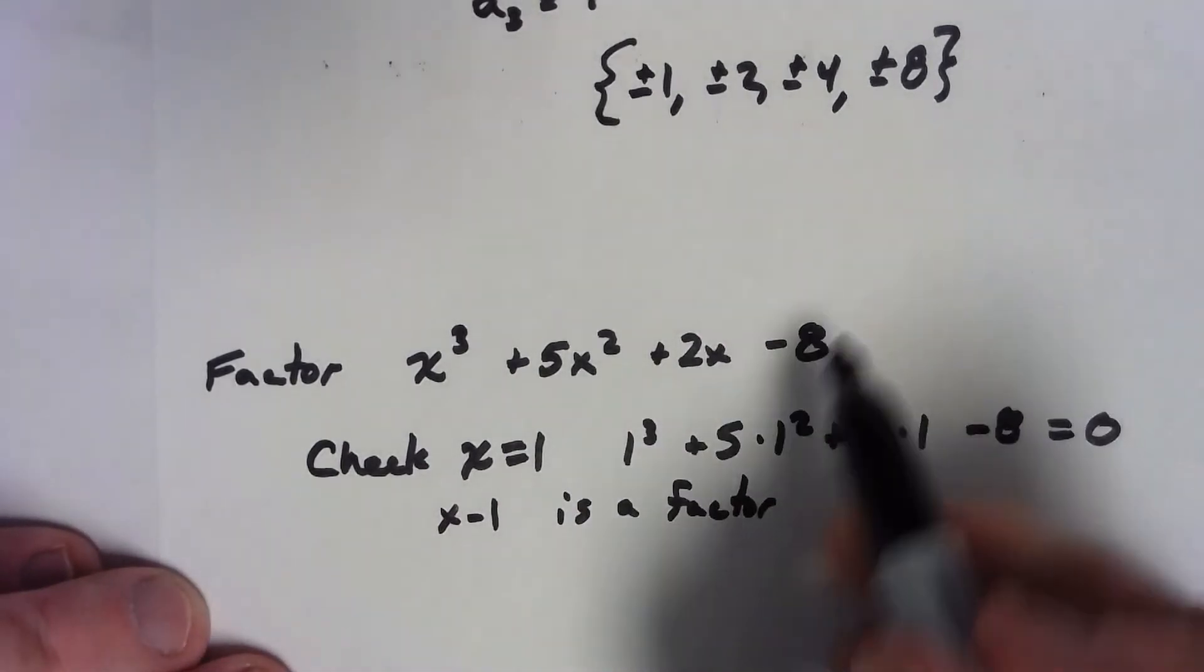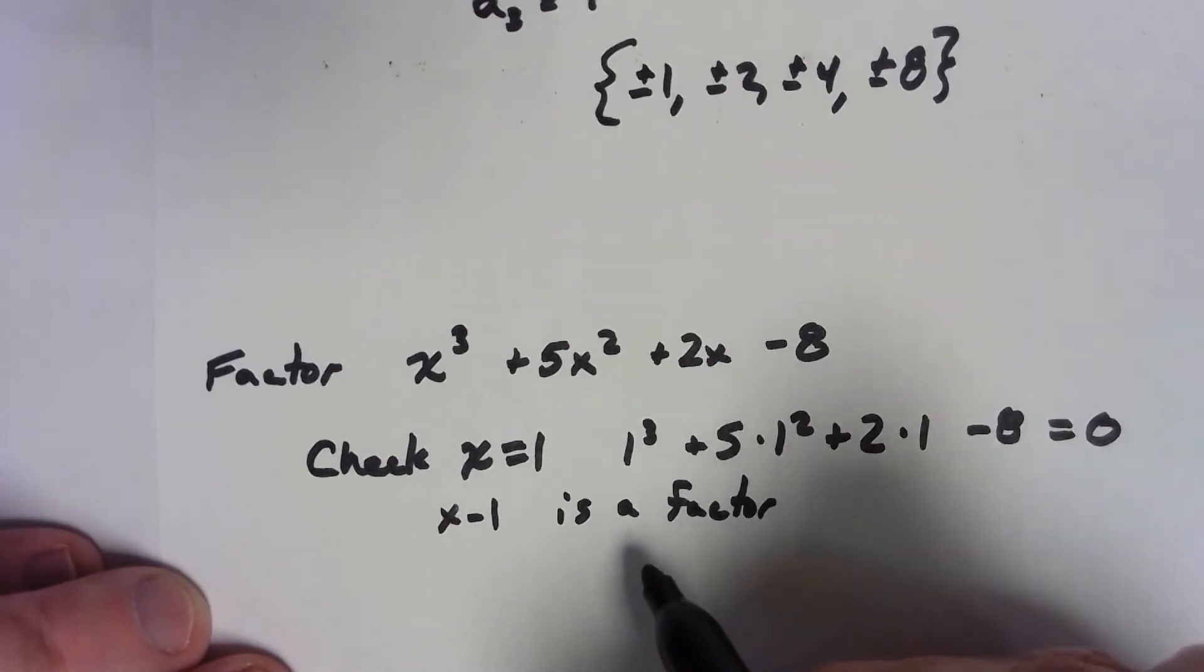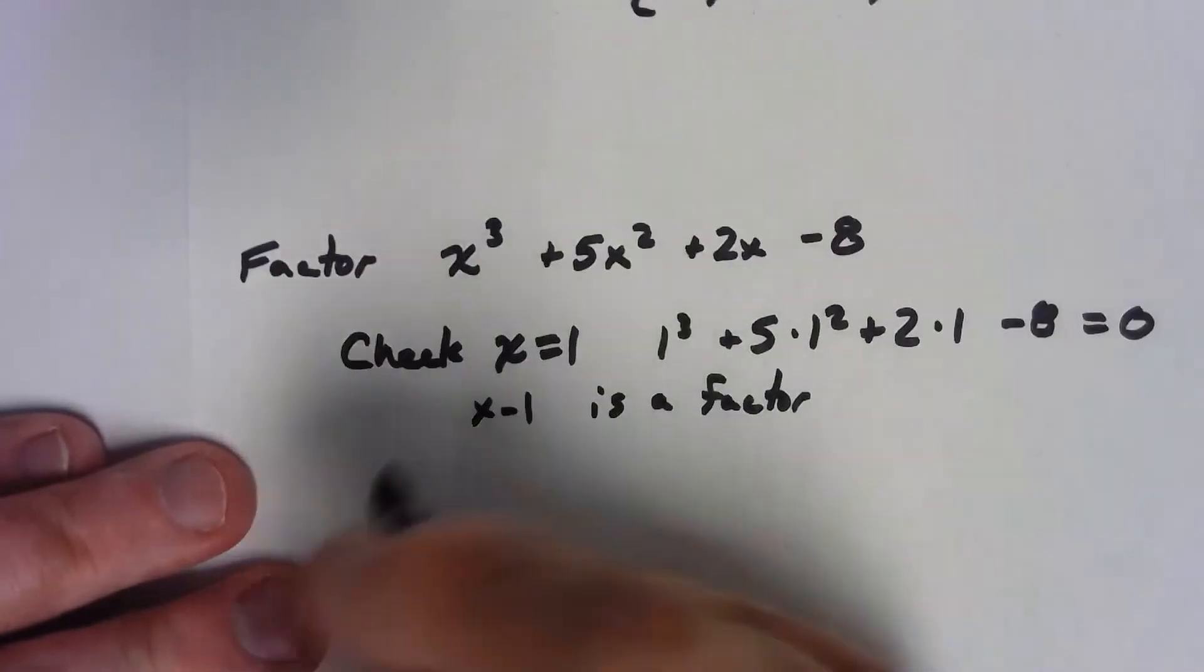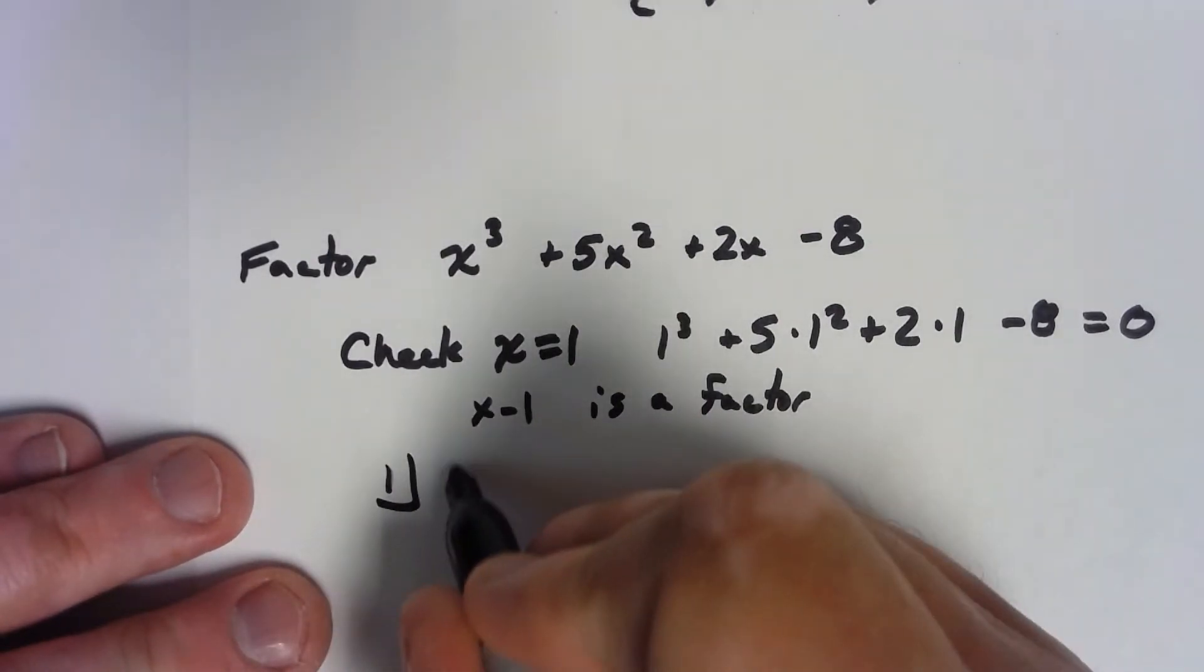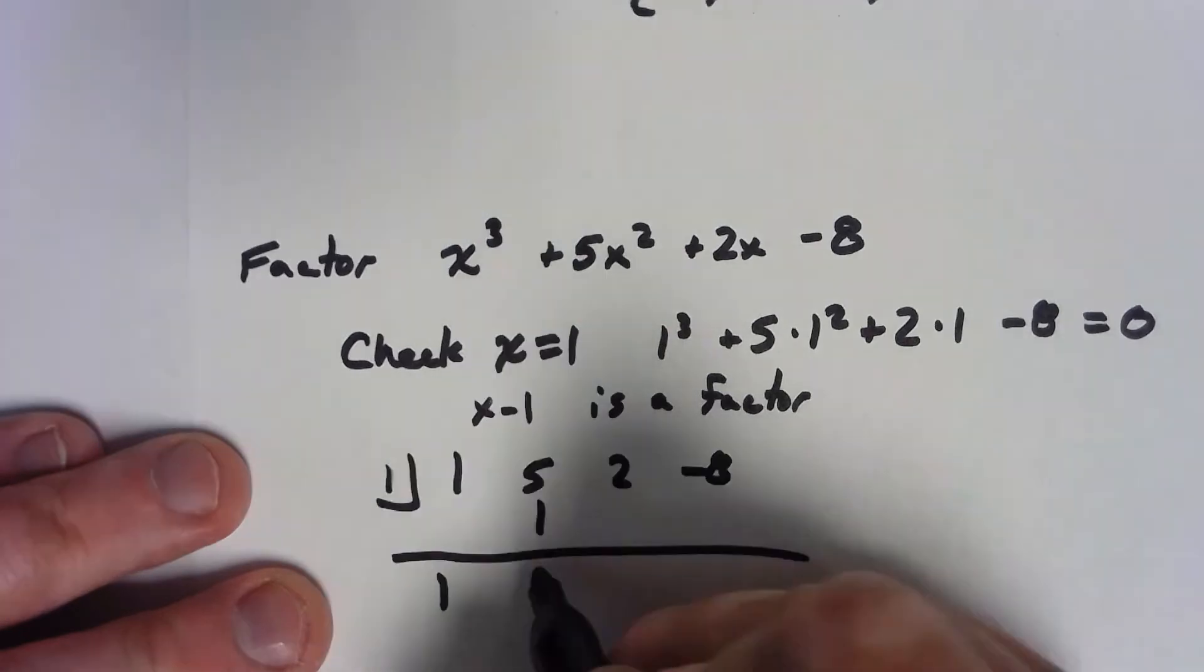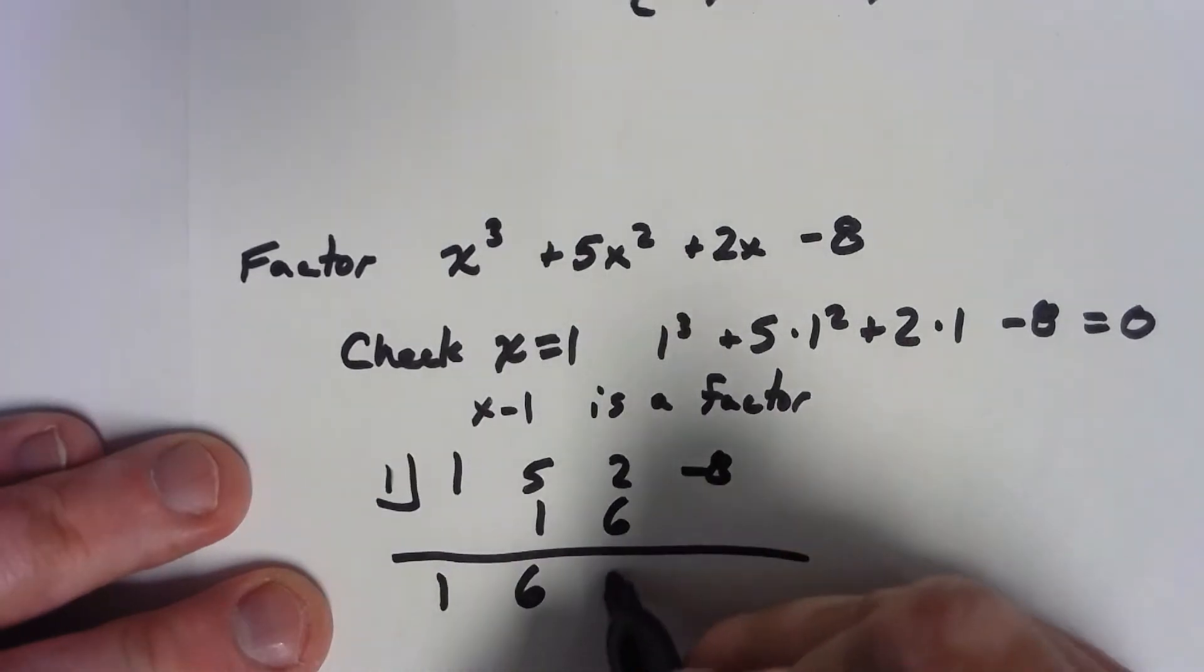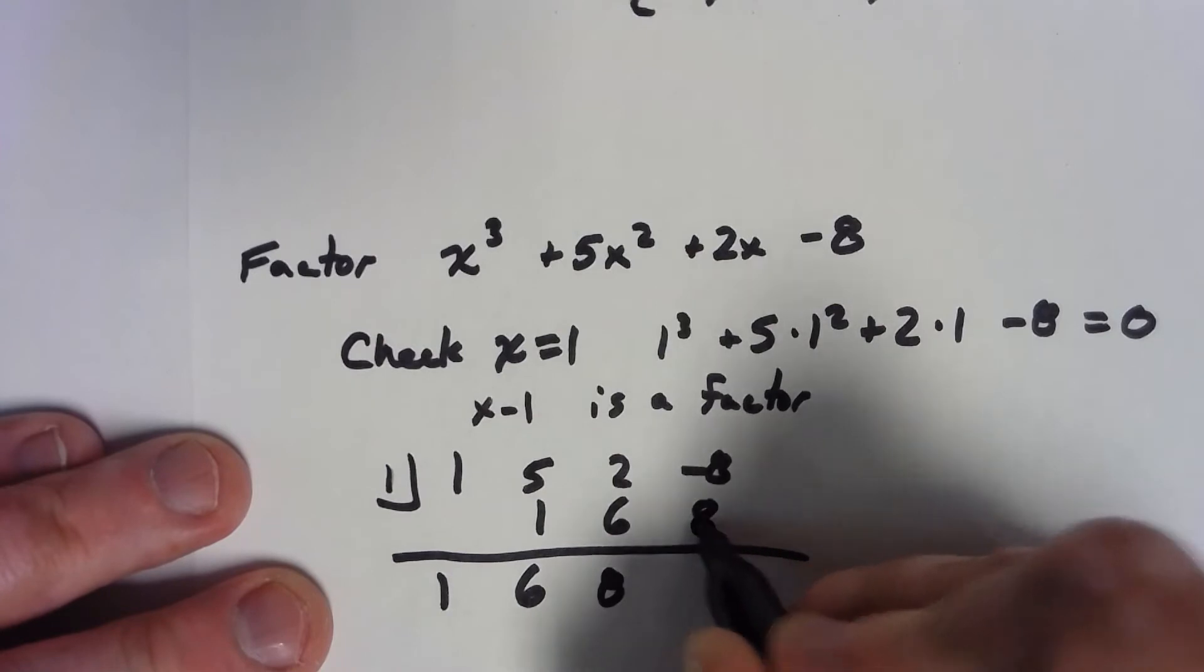So, that means that x minus 1 is a factor. So, if I divide this by x minus 1. Again, I'll use synthetic division. So, I get 1, 5, 2, negative 8. 1 times 1 is 1. Add to get 6. Add to get 8. Zero.